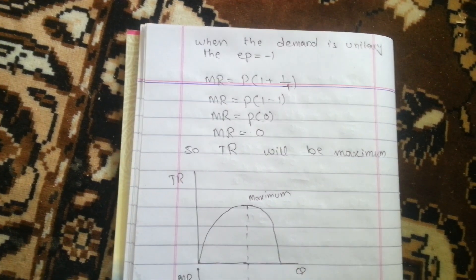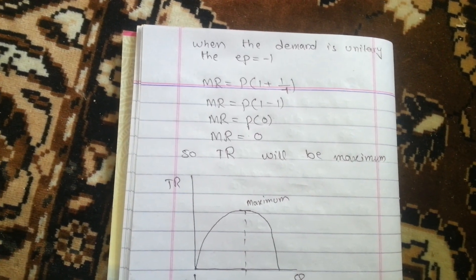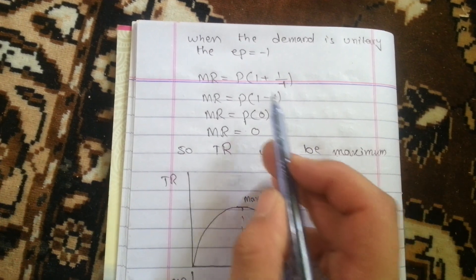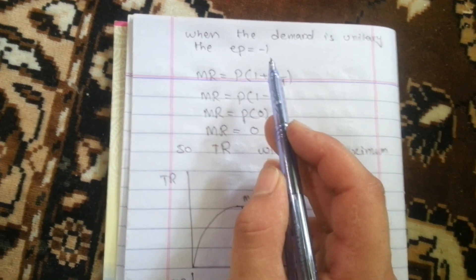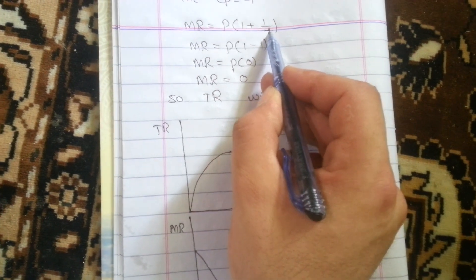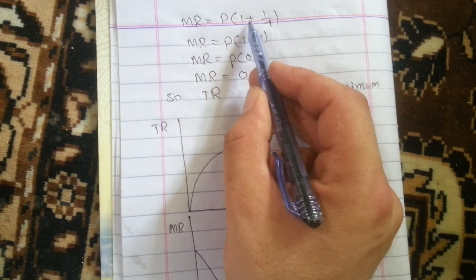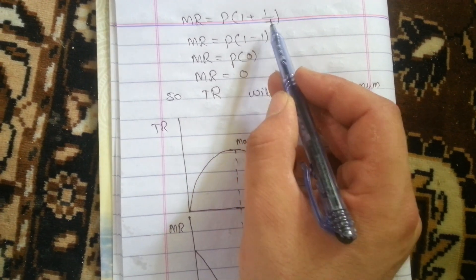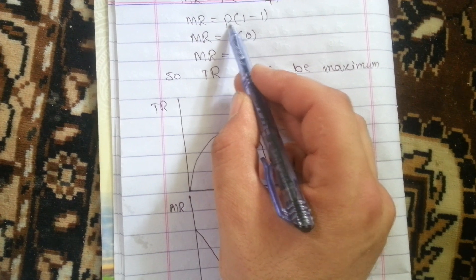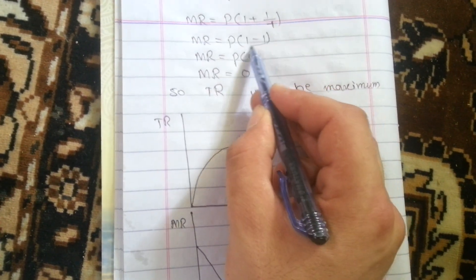When demand is unitary elastic, the elasticity of demand equals minus one. Substituting E_P equals minus one into Equation D: marginal revenue equals price times (1 plus 1/(-1)), which equals price times (1 minus 1), which equals zero.